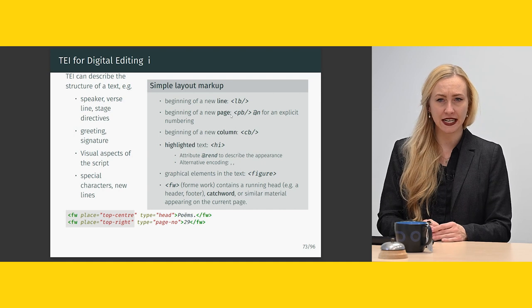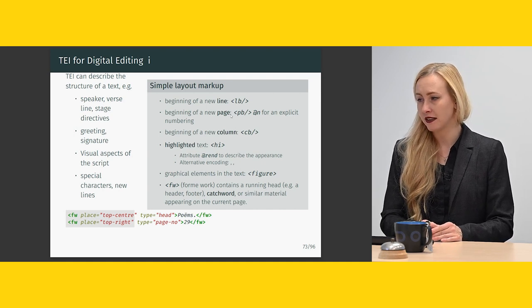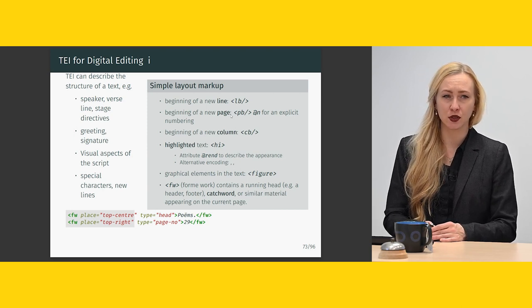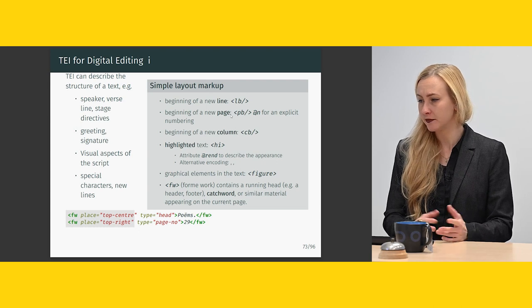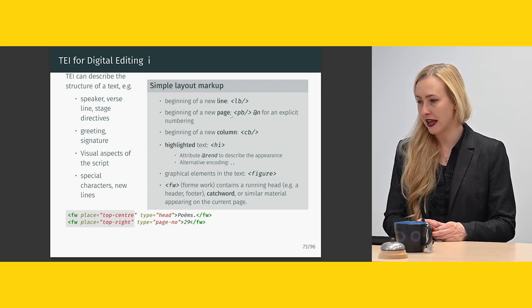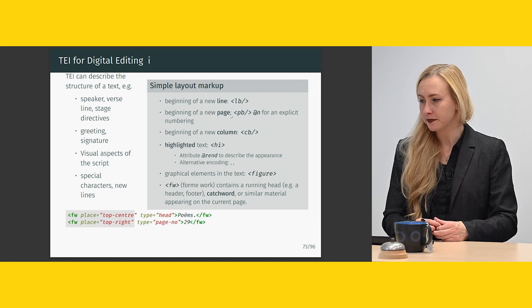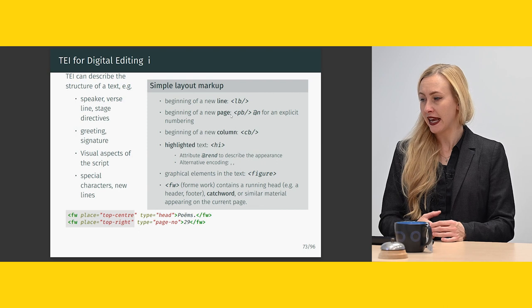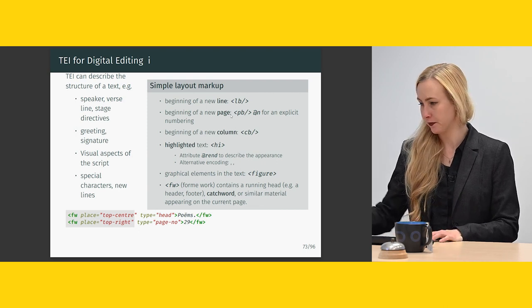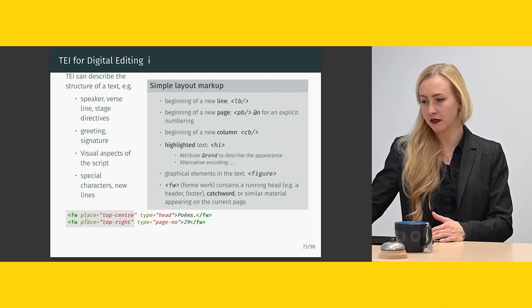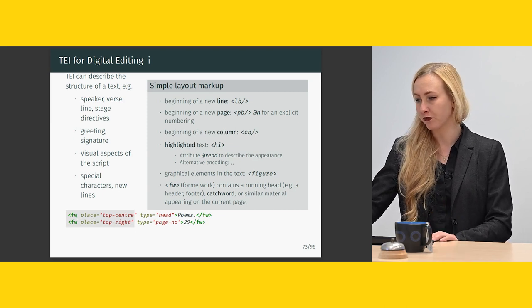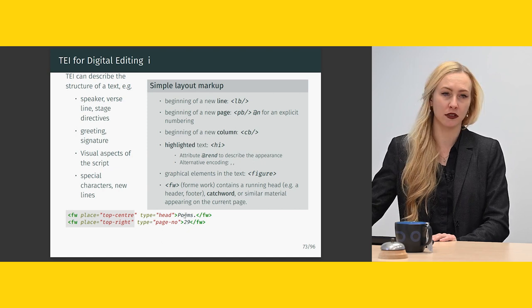You can indicate highlighted text with 'hi' and use the @rendition attribute to describe its appearance. You can have graphical elements in the text using 'figure'. In this example, I used 'fw' (form work), which would contain a running head, header, footer, catchword, or similar material on the current page. You can describe where it's placed, what type it is, and then put in the contents.